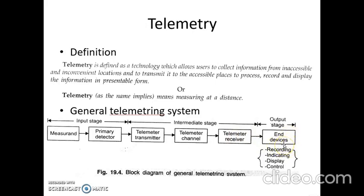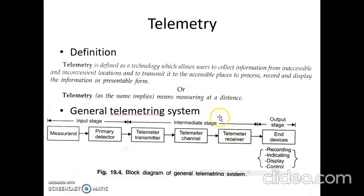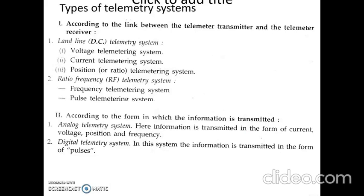For telemetry, some basic instruments are required: for translating the measurant into a suitable electrical signal, processing and transmitting the signal over the channel, and then receiving the signal and converting it into a readily readable form.